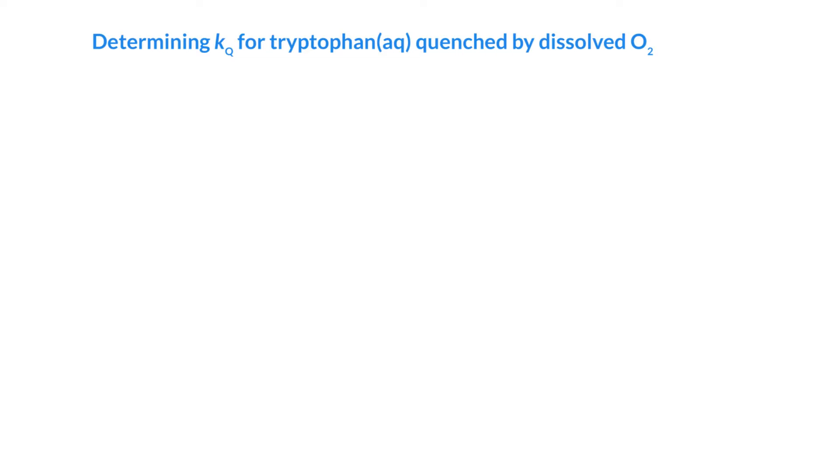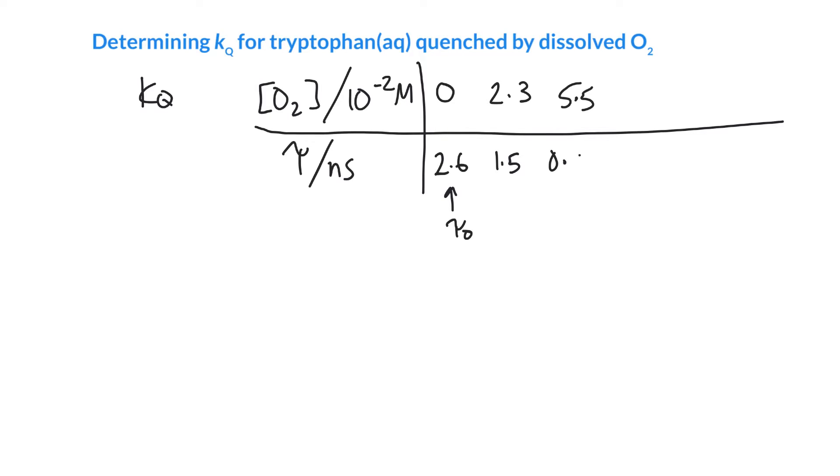We can take some data and calculate kq. The data given in Atkins gives us the concentration of oxygen. To remove units, he divides by 10⁻² moles per liter. The fluorescence lifetimes were determined for five different solutions in nanoseconds. In the absence of a quencher, this would be 2.6 nanoseconds, our τ0. As you gradually have more dissolved oxygen, 23 millimolar gives a lifetime of 1.5 nanoseconds. As you increase the concentration of oxygen, deactivation increases and the fluorescence lifetime gets shorter. All the way out to 0.1 molar, the fluorescence lifetime is about five times faster than in the absence of oxygen.